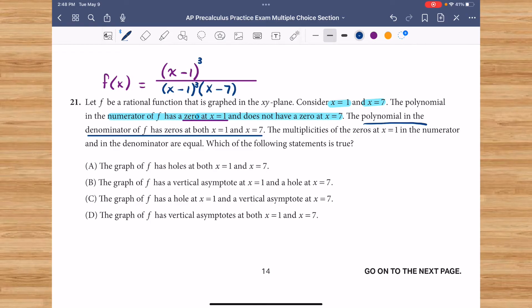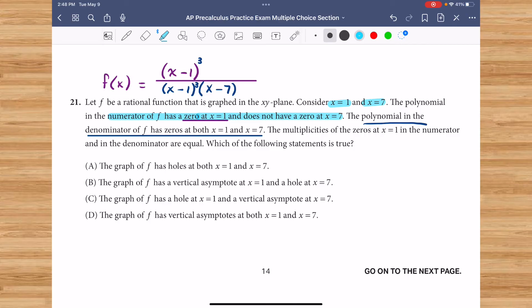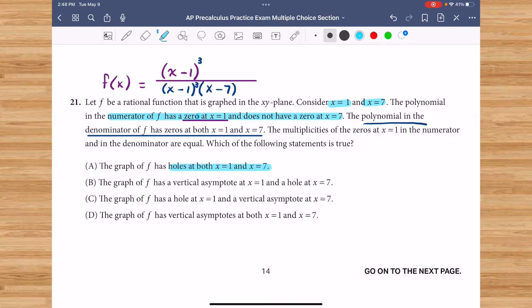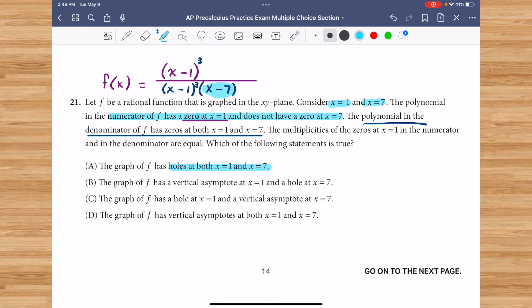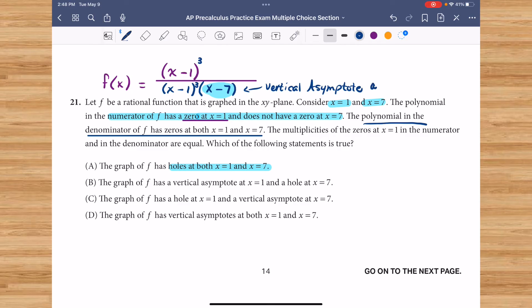Which of the following statements is true? Let's take a look at our options. Question A says the graph of f has a hole at both x equals 1 and x equals 7. This is not true. x equals 7 here is not repeated in the numerator. So this is a vertical asymptote at x equals 7.